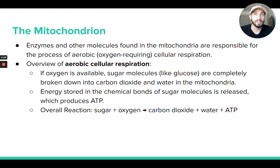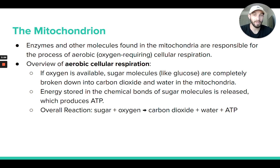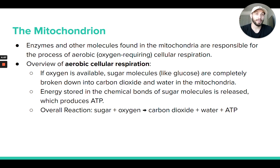ATP is made in the mitochondria through aerobic cellular respiration, taking energy from sugar to make ATP. We call it aerobic because it is an oxygen-requiring process — with the presence of oxygen in the mitochondria, we can fully break down sugar molecules and use that stored energy to make ATP.